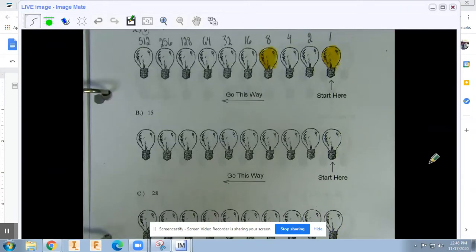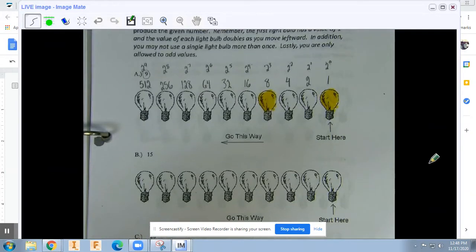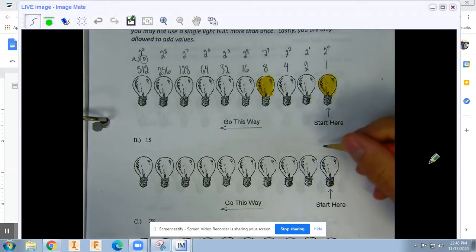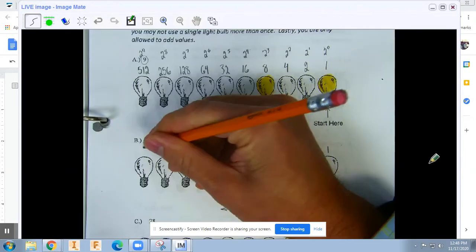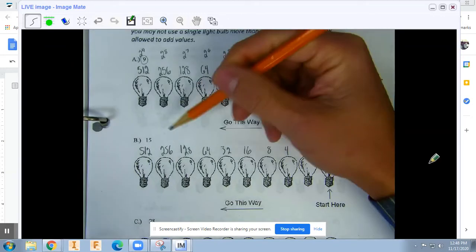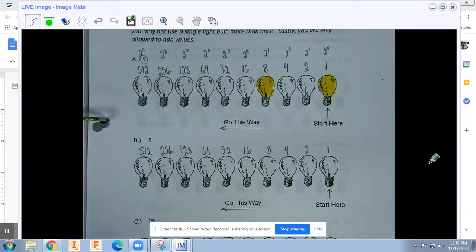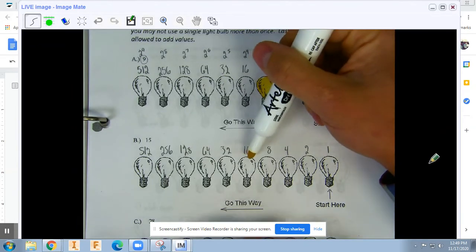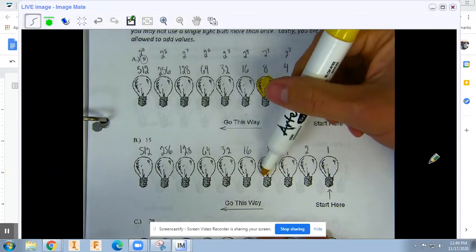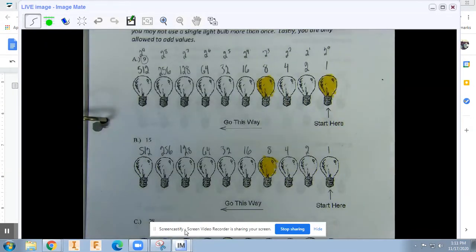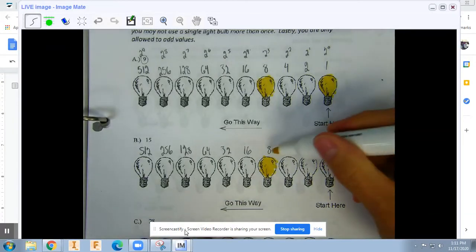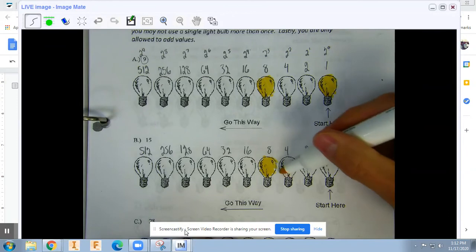The next example is 15. Now these numbers stay the same, so I'm just going to transpose them. What numbers can we add up to make 15? It's always going to take the number that is almost as big as it. So 16 is too big. It can't have 16, so it'll have to have 8. We know that 15 is 8 plus 4 plus 2 plus 1. This is 12 plus 2 is 14 plus 1. So we shade in all of these.